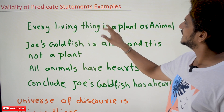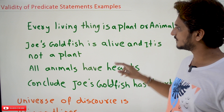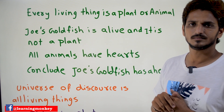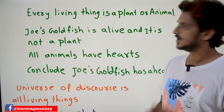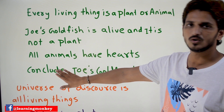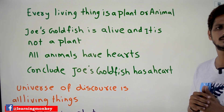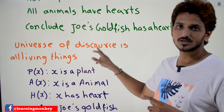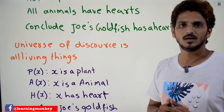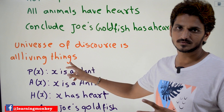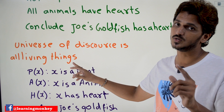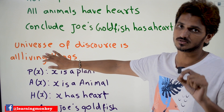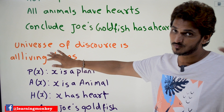Take this example: 'Every living thing is a plant or animal' — this is the first statement. The second statement is 'Joe's goldfish is alive and it is not a plant.' The third statement is 'All animals have hearts.' From these three statements we have to conclude that Joe's goldfish has a heart. The universe of discourse is all living things, which affects how we write the predicate equations.